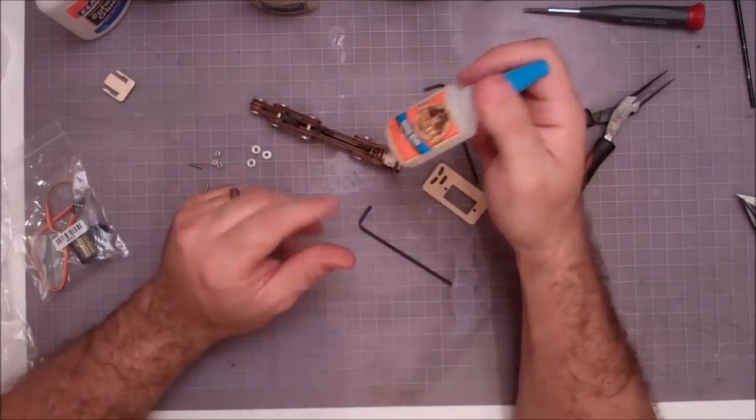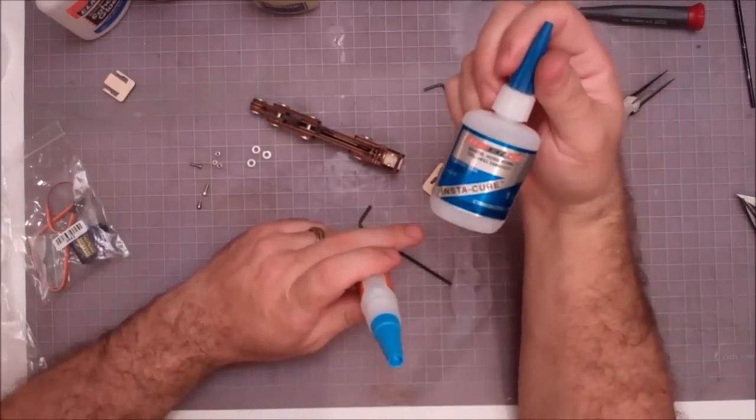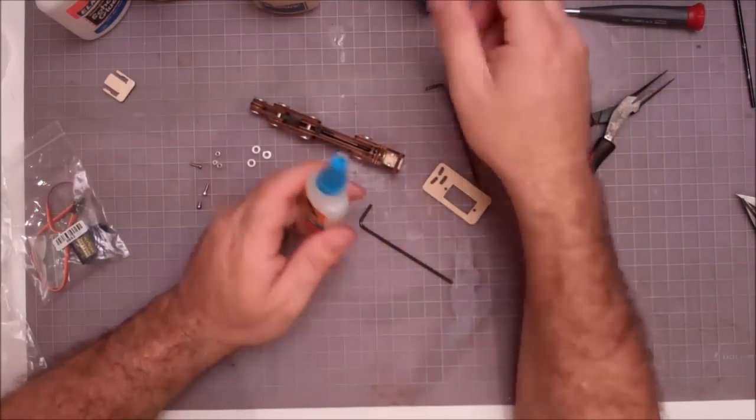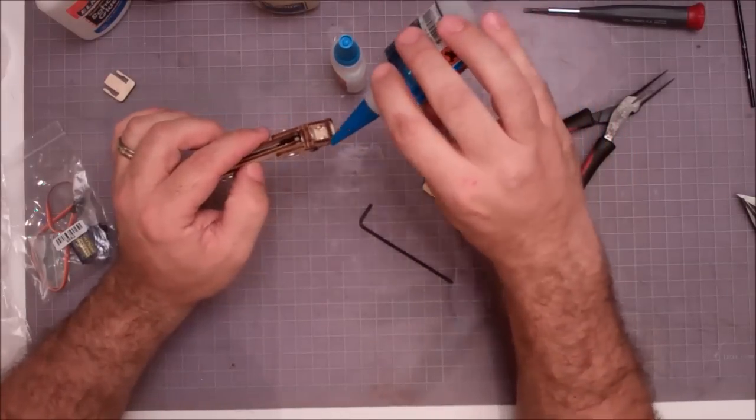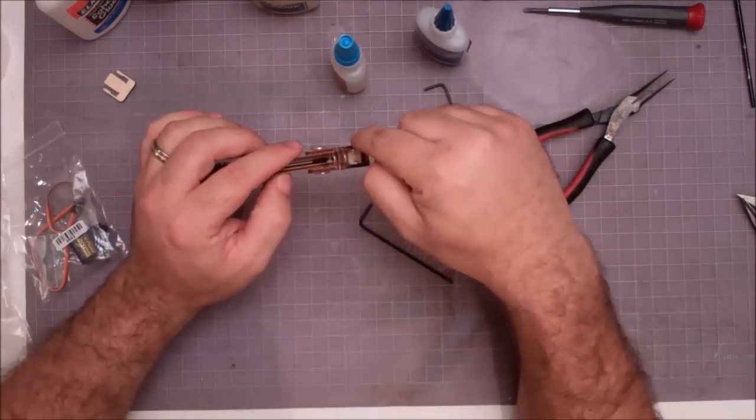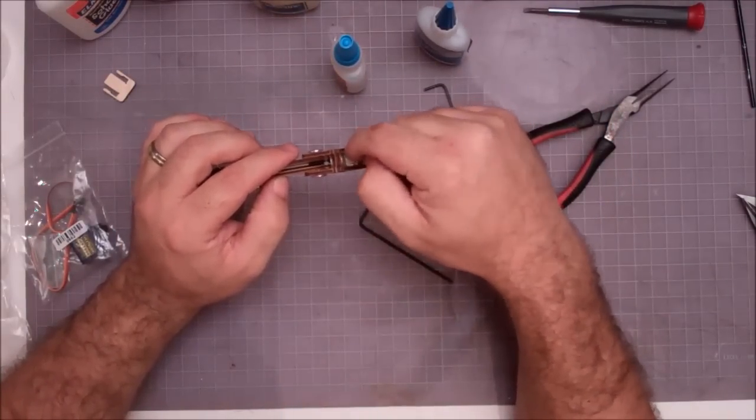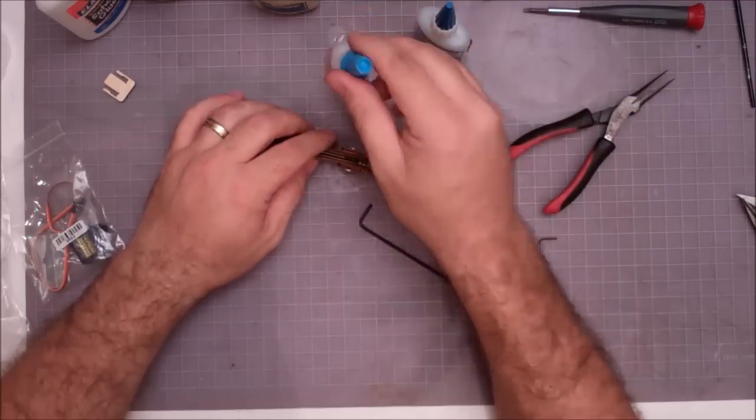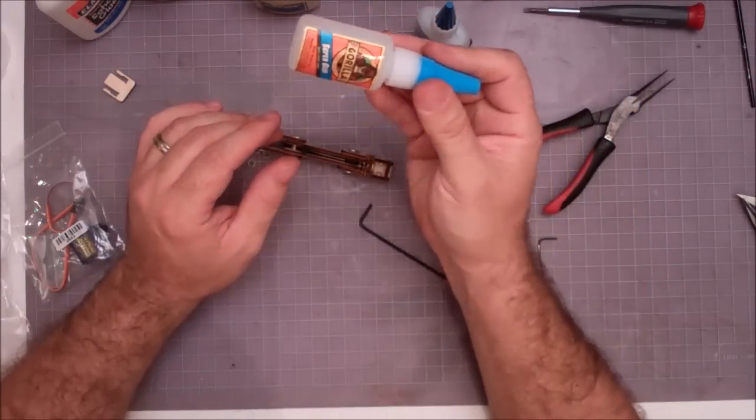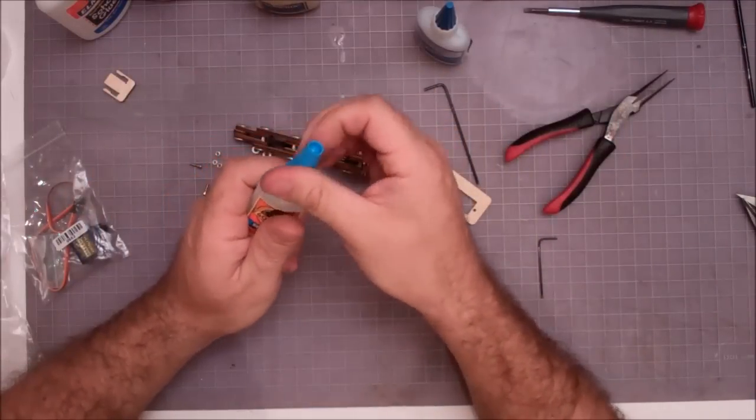And then I'll take my regular super glue. So we used our thin super glue to assemble the finger, but now I want to switch to the regular. If you do this next step with the thin, it'll wick under the nuts and actually glue the screws to the nuts, and that becomes a real problem. If you use the thick stuff, it's not viscous enough to spread out, so you can actually get away with it.